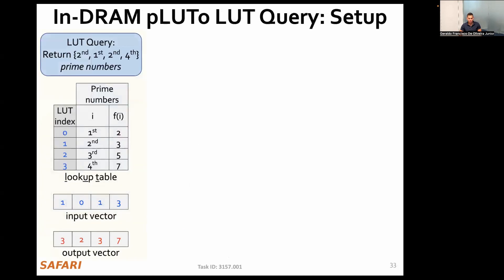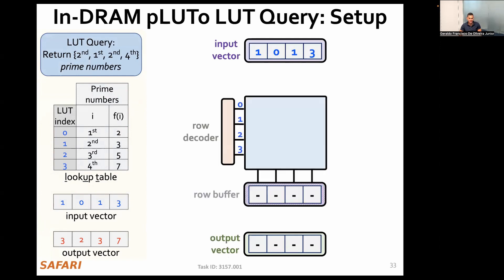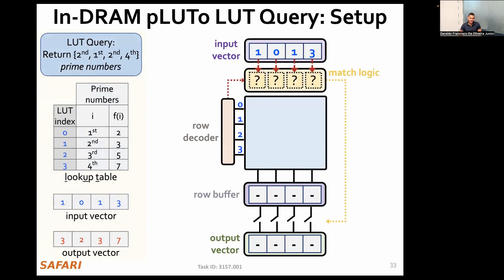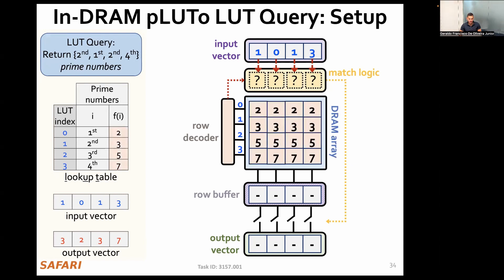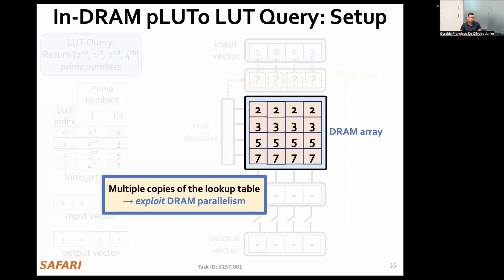We implemented this lookup table query operation in DRAM. To do so, we map each component of the lookup query operation to the corresponding components of a DRAM bank. It starts with the input and output vectors, which are mapped to DRAM row buffers. Then we use the accessing circuitry of DRAM — in particular the DRAM row decoder and row buffer — to support the indexing step of the lookup query operation. Pluto adds match logic, which compares the elements of the input vector to the addresses of the row decoder. This match logic controls a set of access transistors that give access to the output vector. The elements of the lookup table are stored in the DRAM array, and this allows Pluto to exploit DRAM parallelism to perform bulk lookup table query operations.